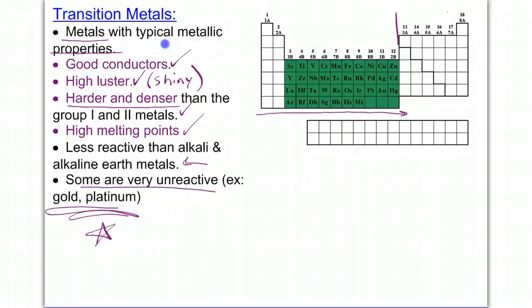There is a dividing line, which is like a staircase, and everything to the left of that staircase is actually going to be categorized as a metal.